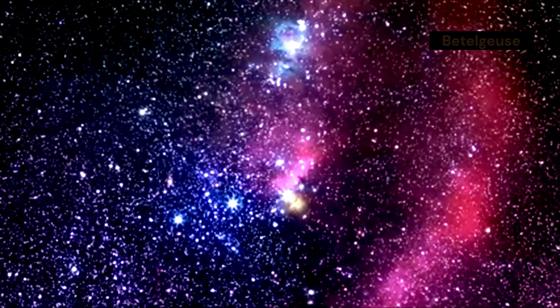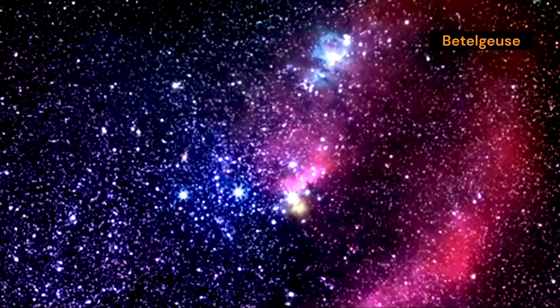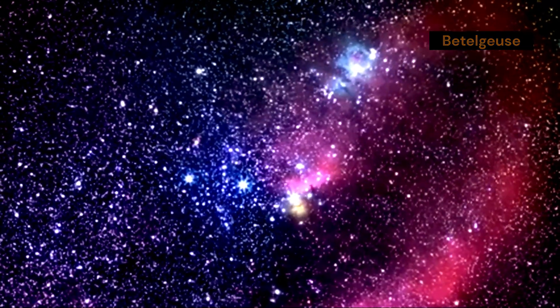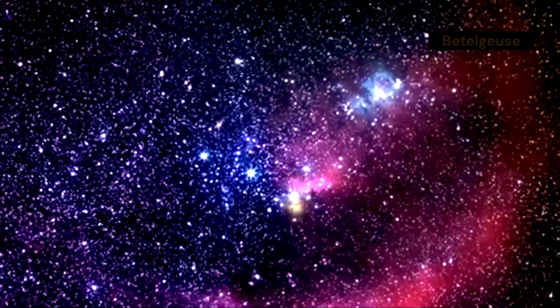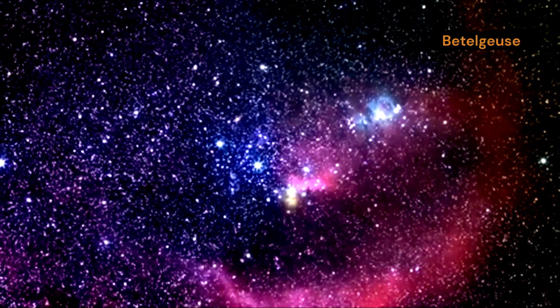It's easy to spot because of Orion's belt, three stars lined up like a belt buckle. These stars are named Alnitak, Alnilam, and Mintaka, and they form a straight line that is unmistakable in the night sky.